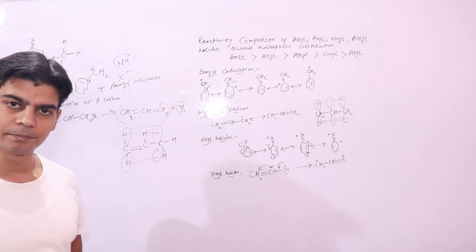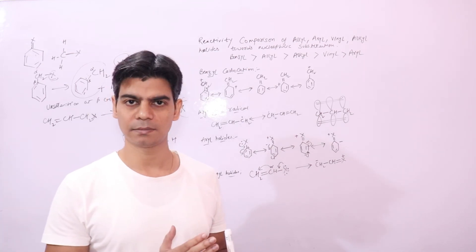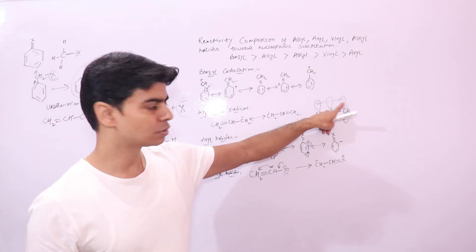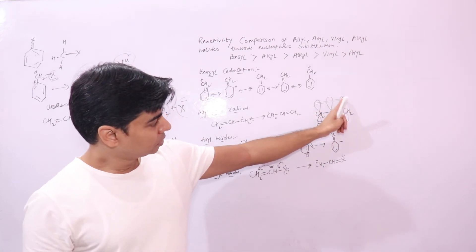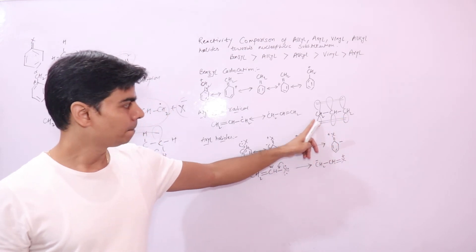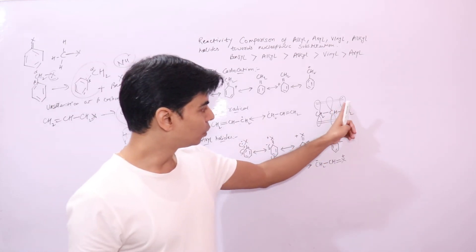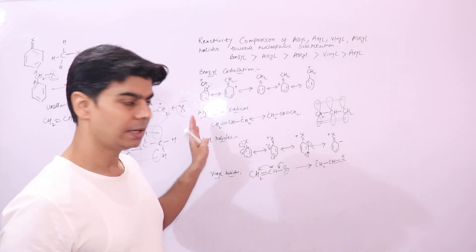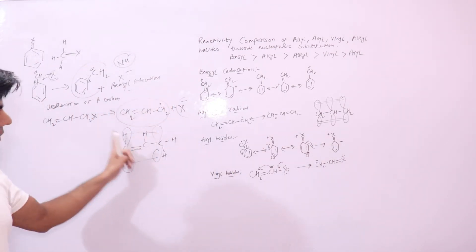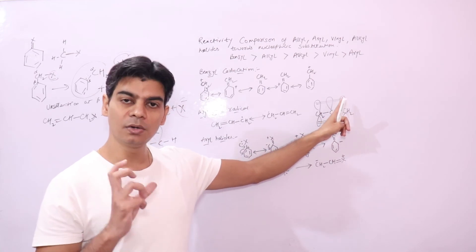We know that when P orbitals are in the same plane, electrons can be easily delocalized. Whenever we have delocalized pi electrons — these are the electrons of the pi bond — the electron of the free radical can move freely between these three P orbitals. This is your delocalized pi electron system, the same as studied in benzene. This delocalized pi electron system adds to the stability of the allyl free radical. That is why allyl halides are more reactive, because the allyl radical is stabilized due to this delocalized pi electron system.